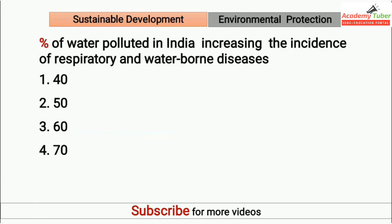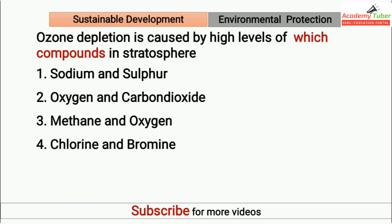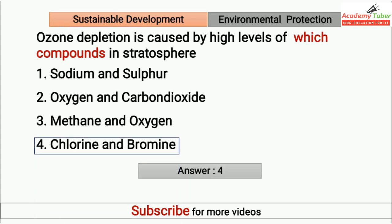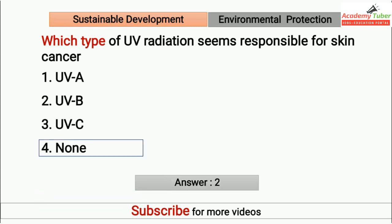Percentage of water polluted in India increasing the incidence of respiratory and waterborne diseases? Answer is 70%. Ozone depletion is caused by high levels of which compounds in the stratosphere? Answer is chlorine and bromine compounds. Which type of ultraviolet radiation seems responsible for skin cancer? Answer is ultraviolet radiation B.